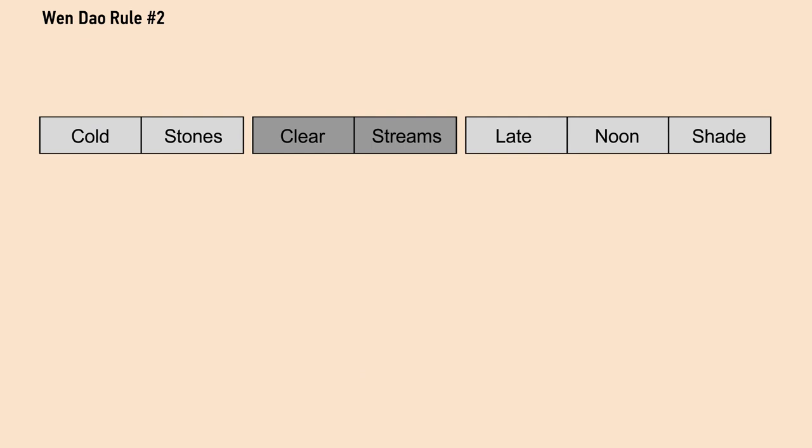Try to sequence words so that they connect meanings inside each grouping more than they do between the groupings. Stones and clear do not follow as well as cold stones, for instance.